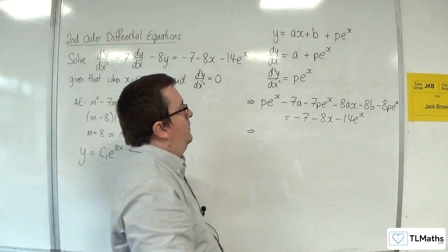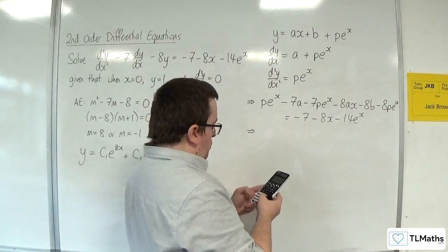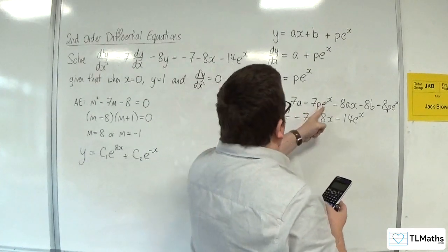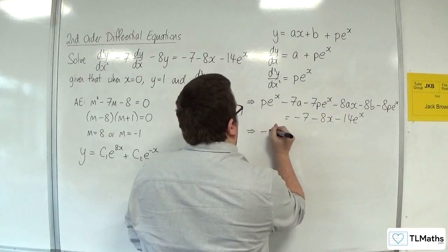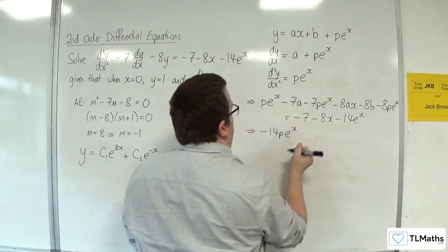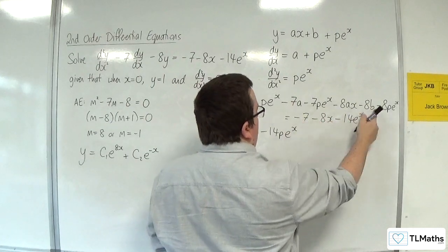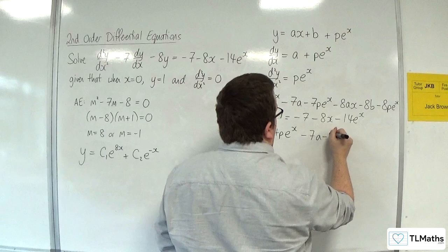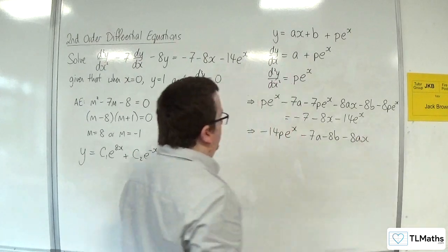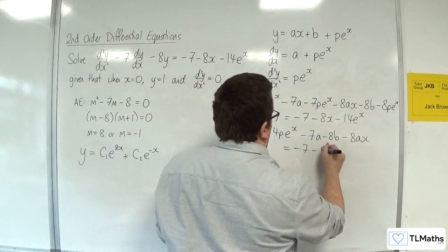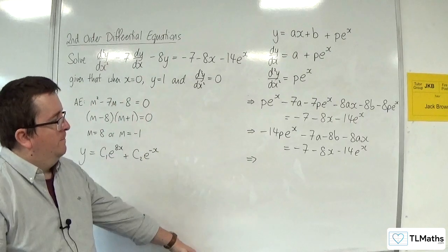We have, we've got 1p there, take away 7pe^x there, take away 8. So -14pe^x. We've got the -7a and the -8b, so -7a - 8b. And we've got the -8ax. I think that's all the bits. Probably would have been better if I'd written them in the same order, but it doesn't matter.